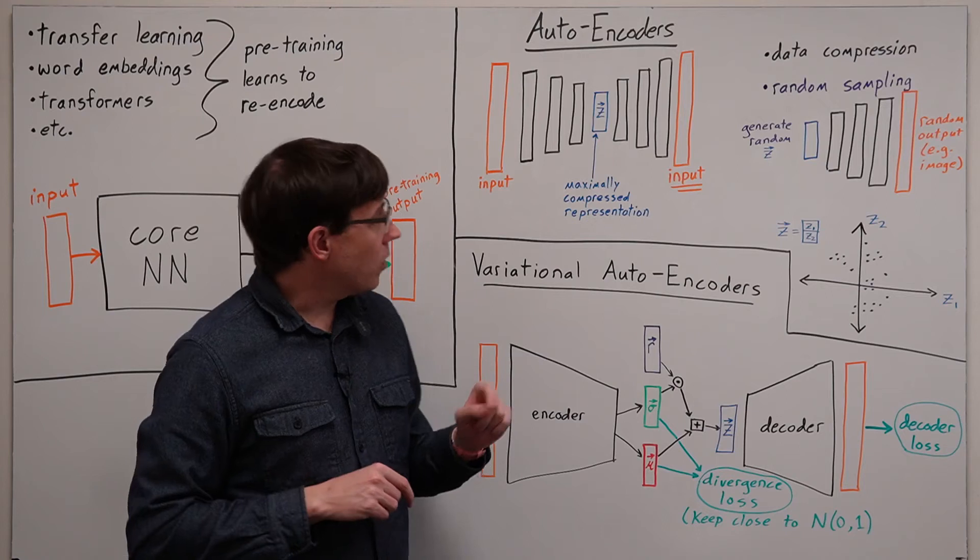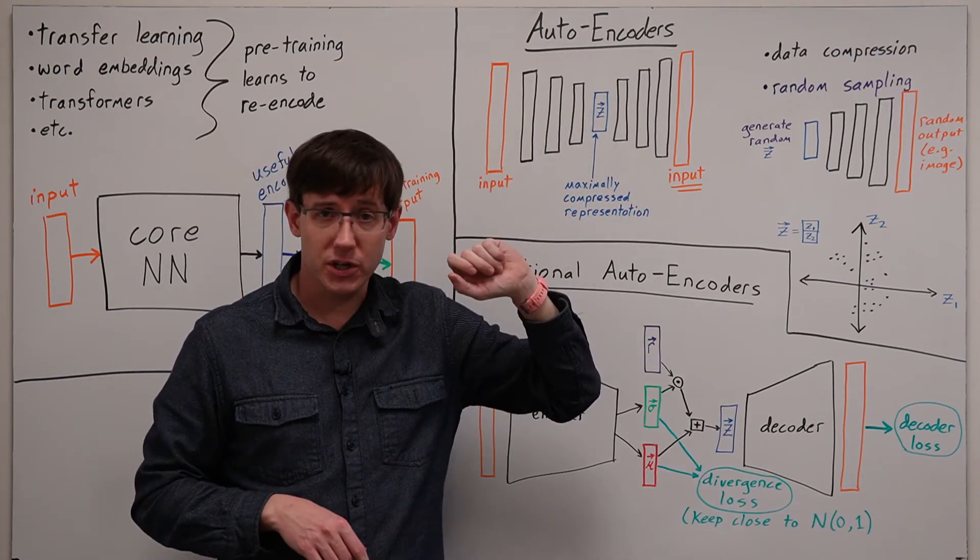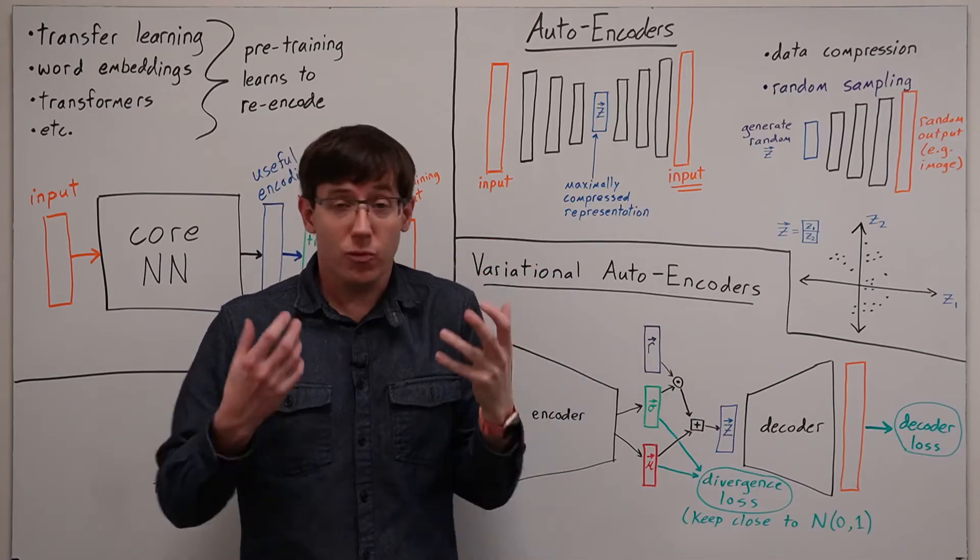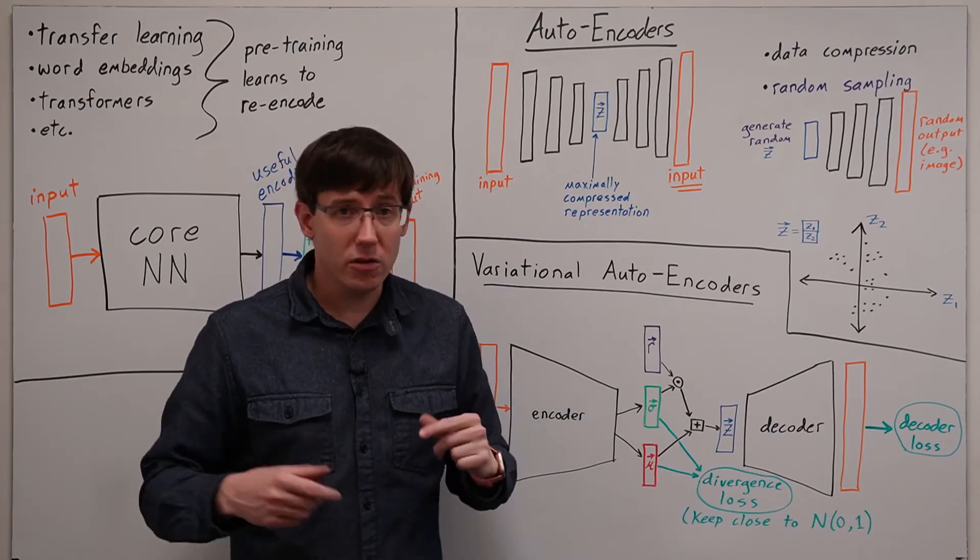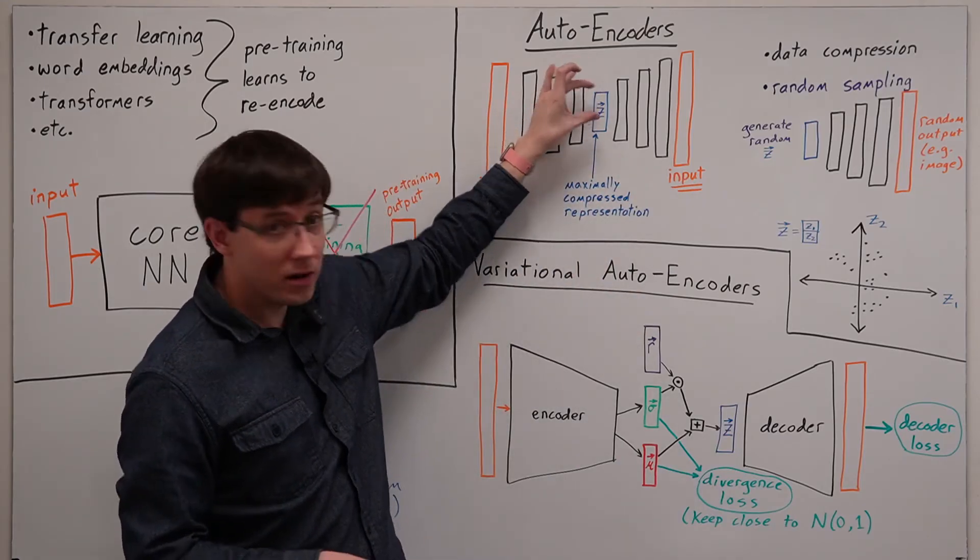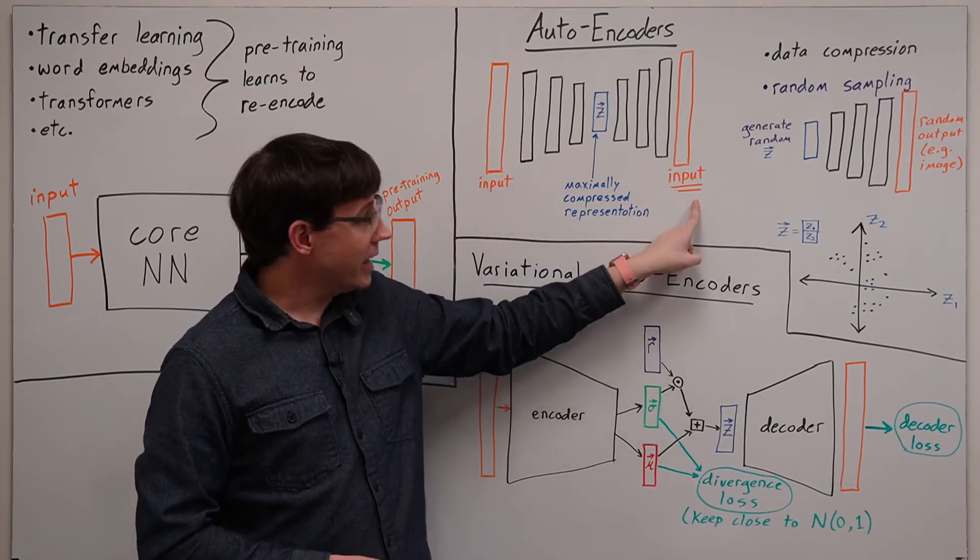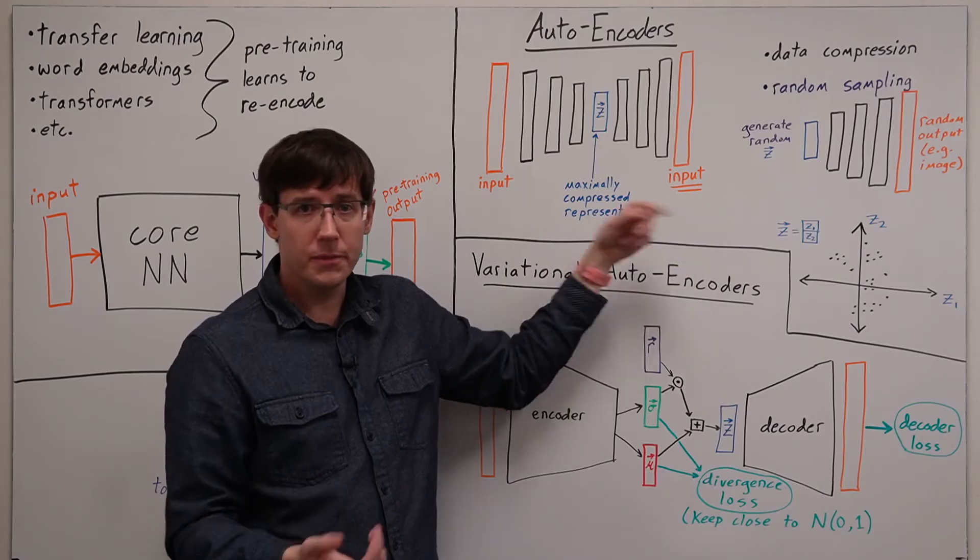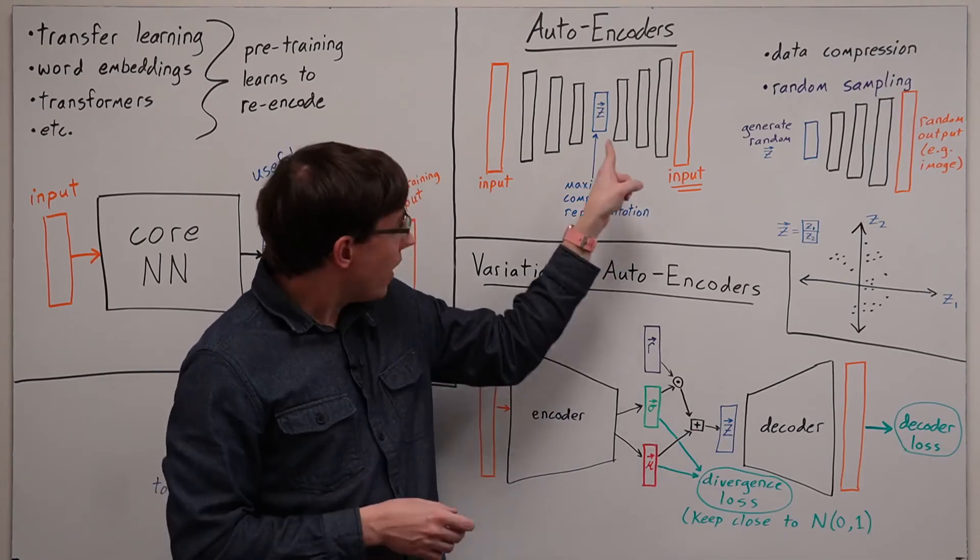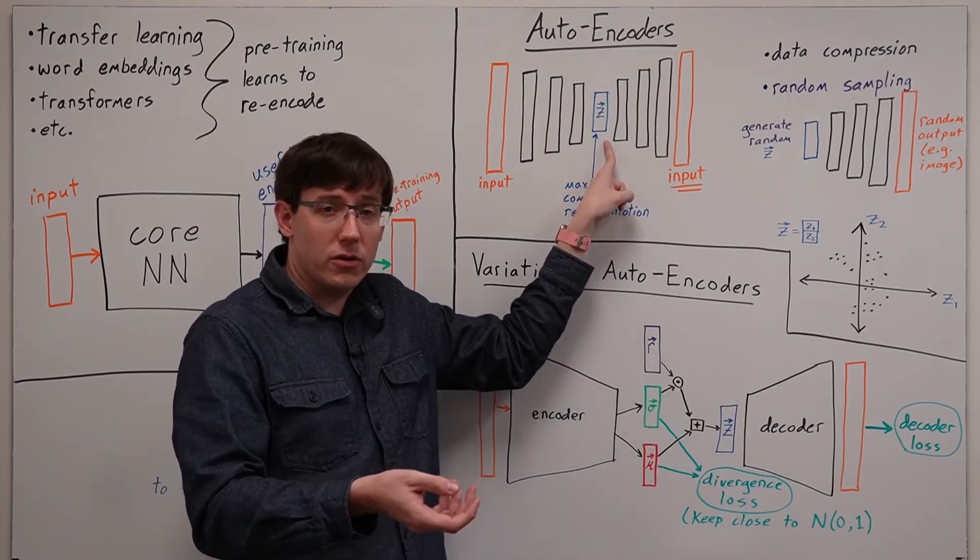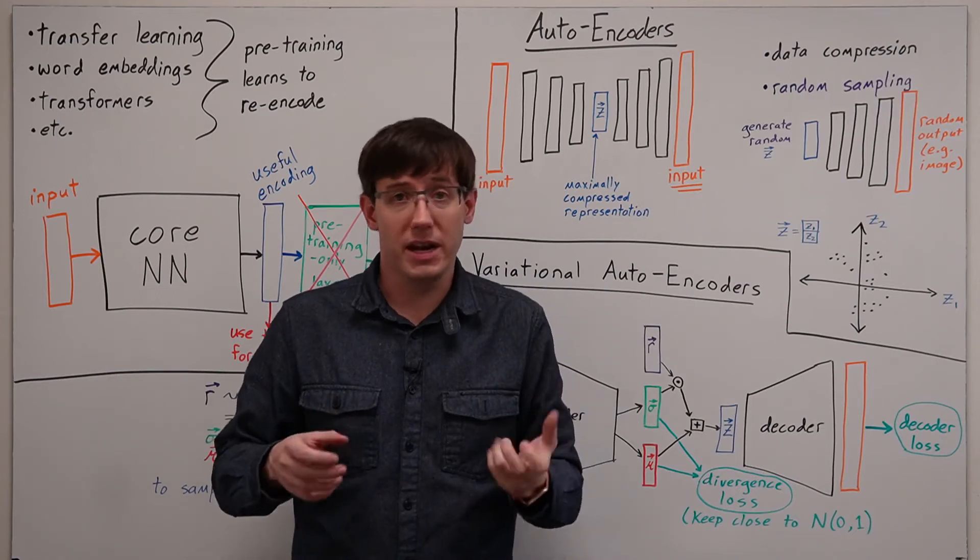Unfortunately, that only works if we really have achieved the maximum possible compression here, and it's really hard in general to be sure that you've done that. What's much more likely is that you'll either find this hidden layer is much too small and no matter how much you train it, it can't get very good at reproducing the inputs, or this is too big, and there are some possible input vectors that we could give to the decoder that don't actually resemble anything from the data set.